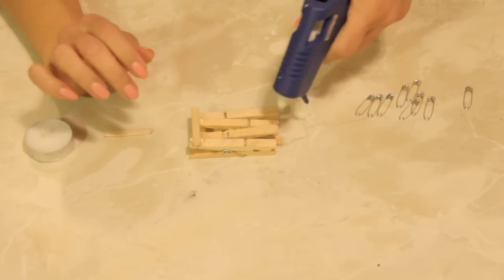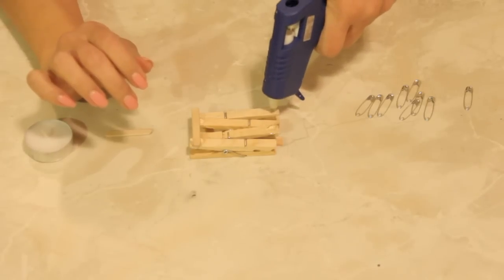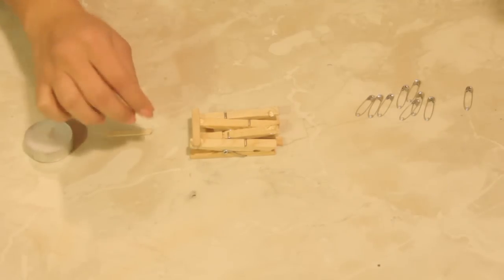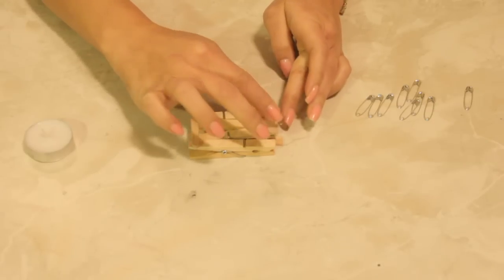Alright, and then we are going to put on the other side just a couple more dabs of hot glue and our little brace.